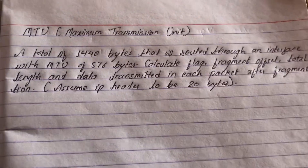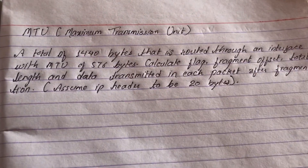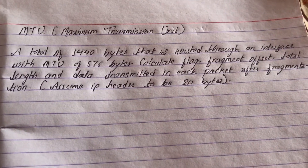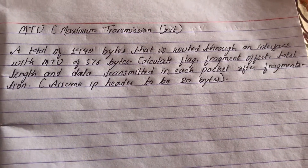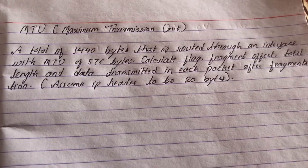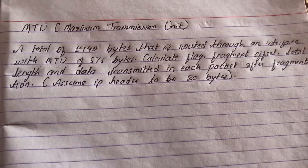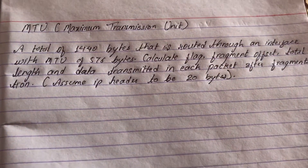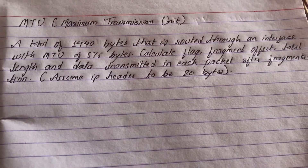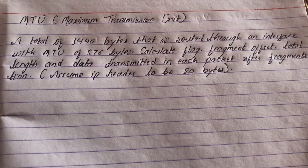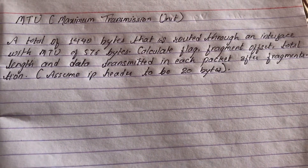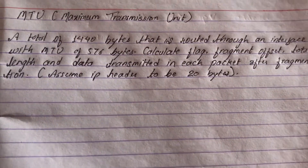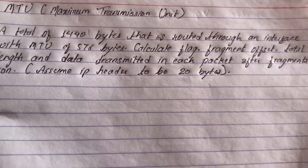Let's look at MTU — Maximum Transmission Unit. An MTU deals with the maximum number of bytes transferred in a packet. In Ethernet, the maximum bytes that can be transferred is 1500 bytes.